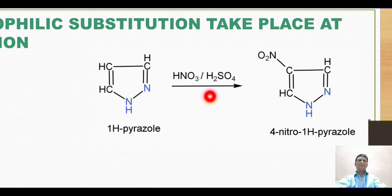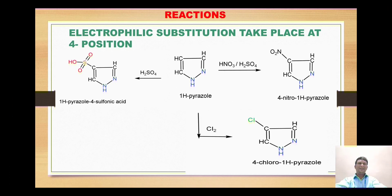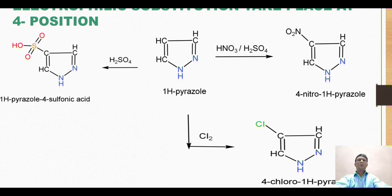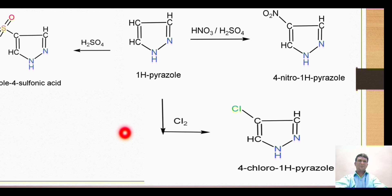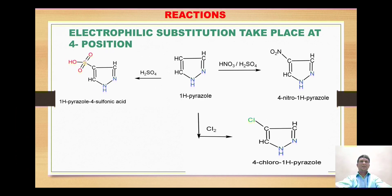For example, when pyrazole is treated with nitric acid in the presence of sulfuric acid, the nitronium ion generated attacks at position four to give 4-nitro-1H-pyrazole. Similarly, when pyrazole is treated with sulfuric acid, the sulfur trioxide electrophile attaches at position four to form pyrazole-4-sulfonic acid. Treatment with chlorine in the presence of FeCl3 gives the chloronium ion, which attaches at position four to give 4-chloro-1H-pyrazole. Nitration, sulfonation, and halogenation are all given exclusively at C4.